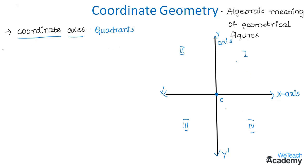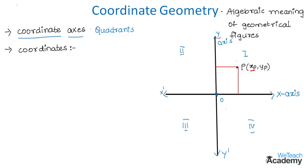Now let us come to the next topic, which is coordinates. Let us consider a point P in the plane with order pair (xp, yp). Here xp denotes the perpendicular distance of P from the y-axis, and yp denotes the perpendicular distance of P from the x-axis. Thus the point P is represented by the order pair of real numbers (xp, yp).